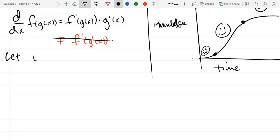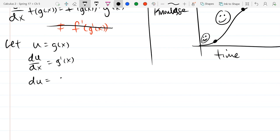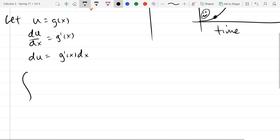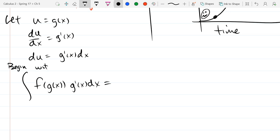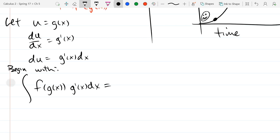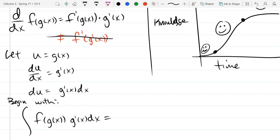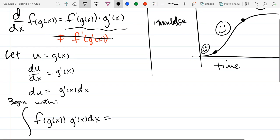So I'm going to make some variable changes. Let u equal g of x. du/dx will be g prime of x. And treating du/dx like a fraction. So I'm going to make some substitutions now. So we're going to integrate. So we're going to begin with this integral right here. g prime of x dx is du.